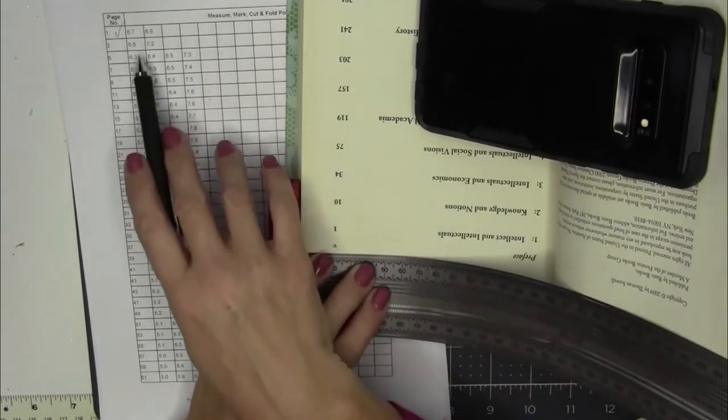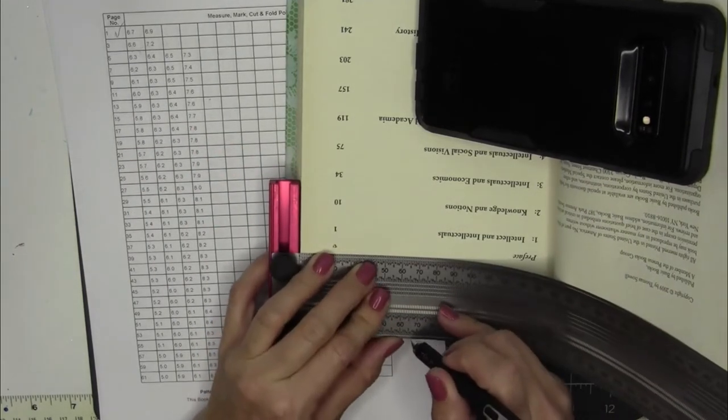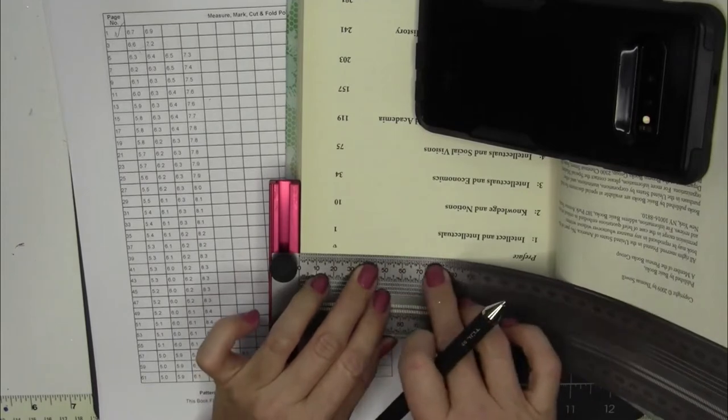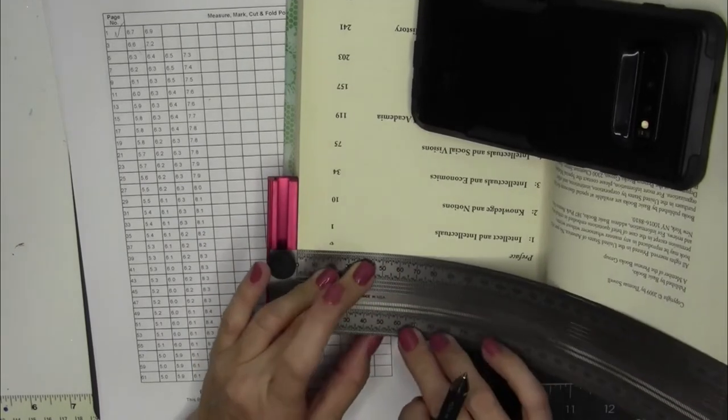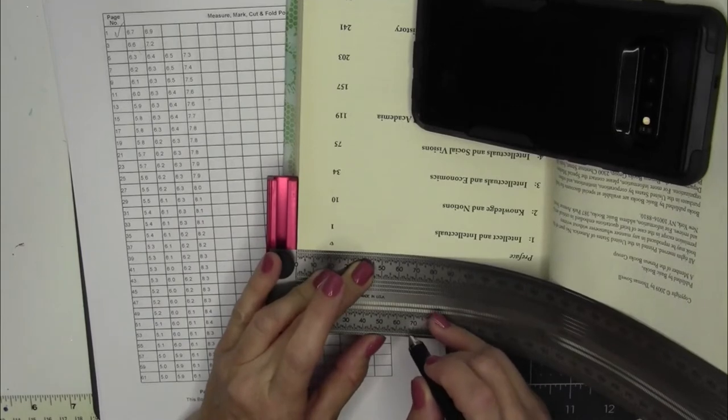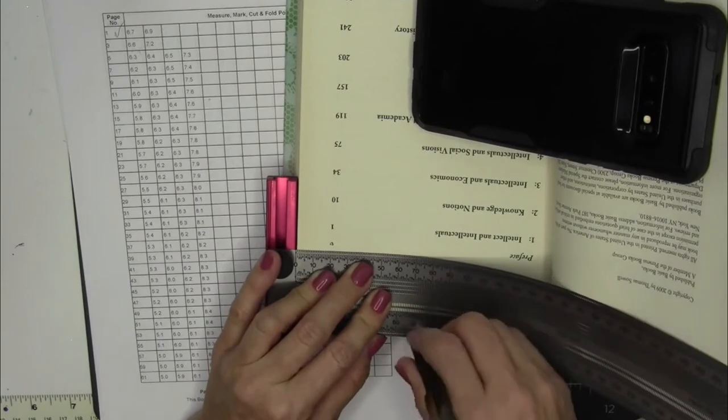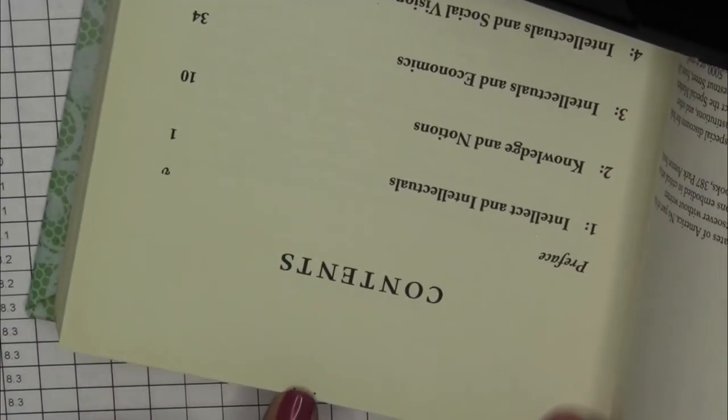My second one, I did the first one, but my second one is 6.6, 7.2. And now instead of usually using this part of it, I'll use the bottom of the ruler, which again is nice that it has the measurements down here. So 6.6 and 7.2.